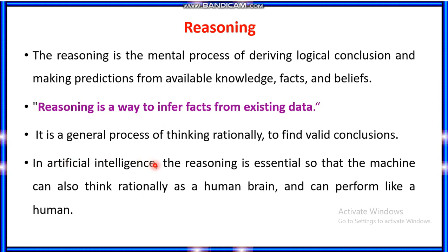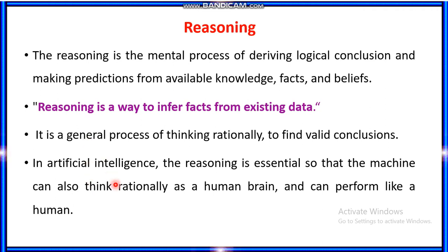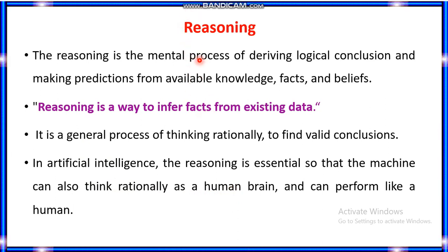In artificial intelligence, reasoning is essential so that the machine can also think rationally as a human brain and can perform like a human. The machine is going to think like a human and it is going to take decisions. That capability of inferring knowledge is called reasoning.